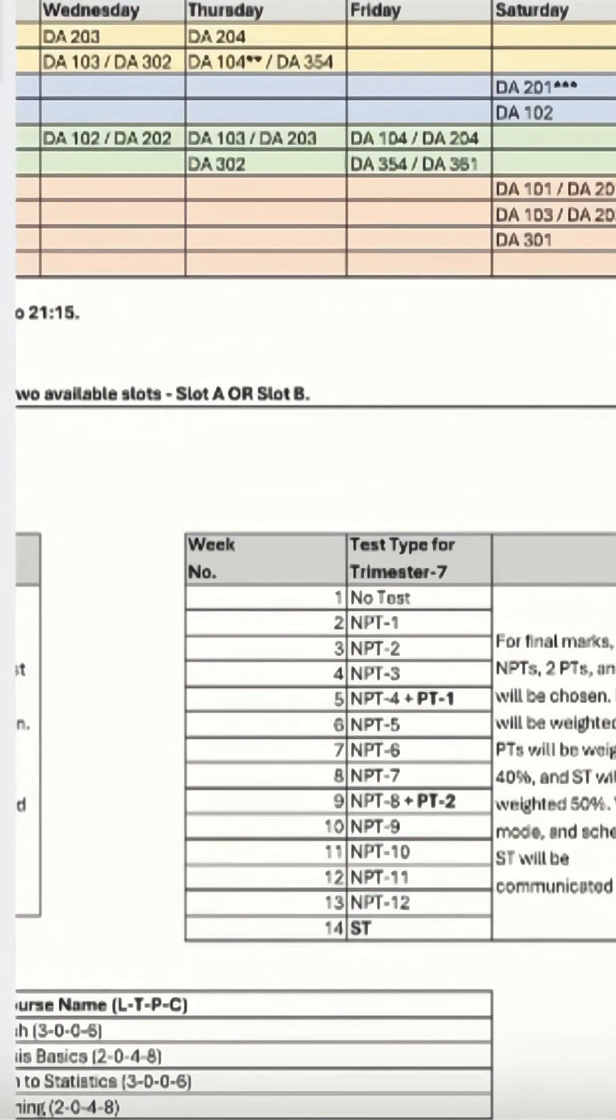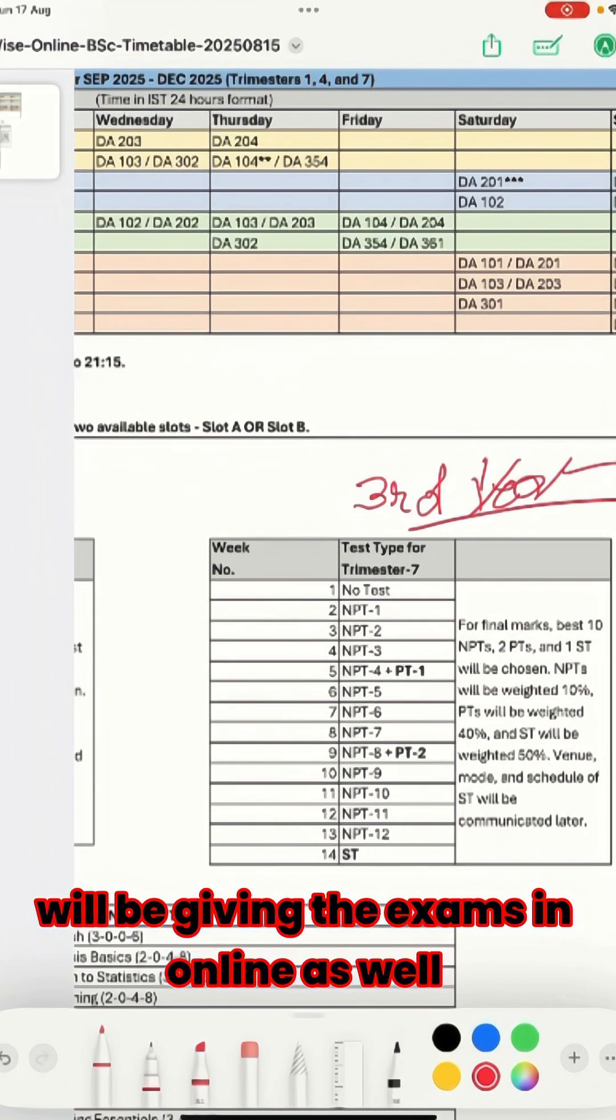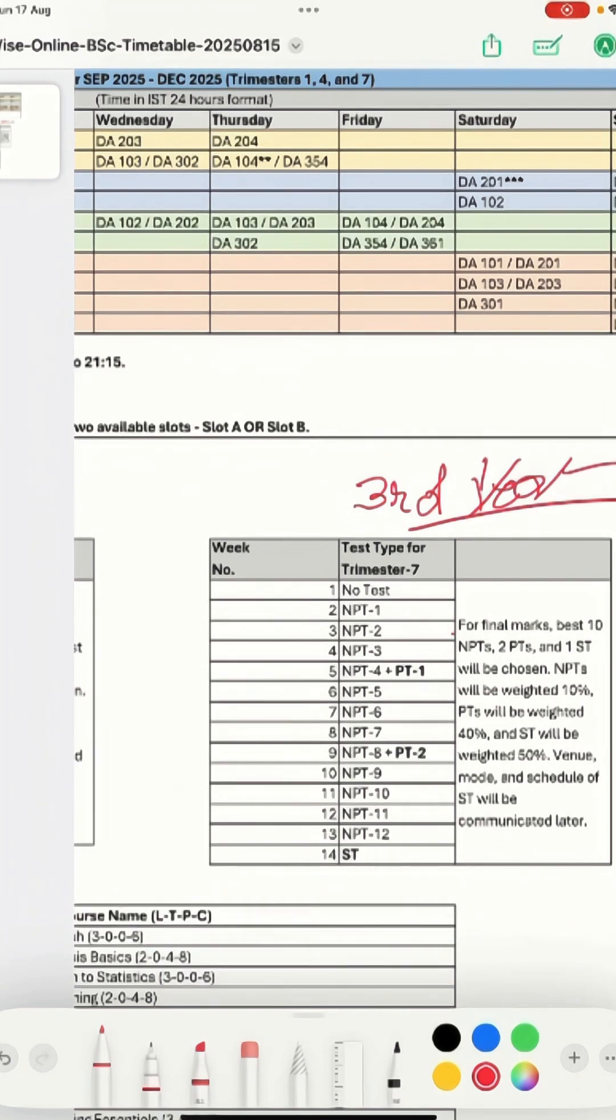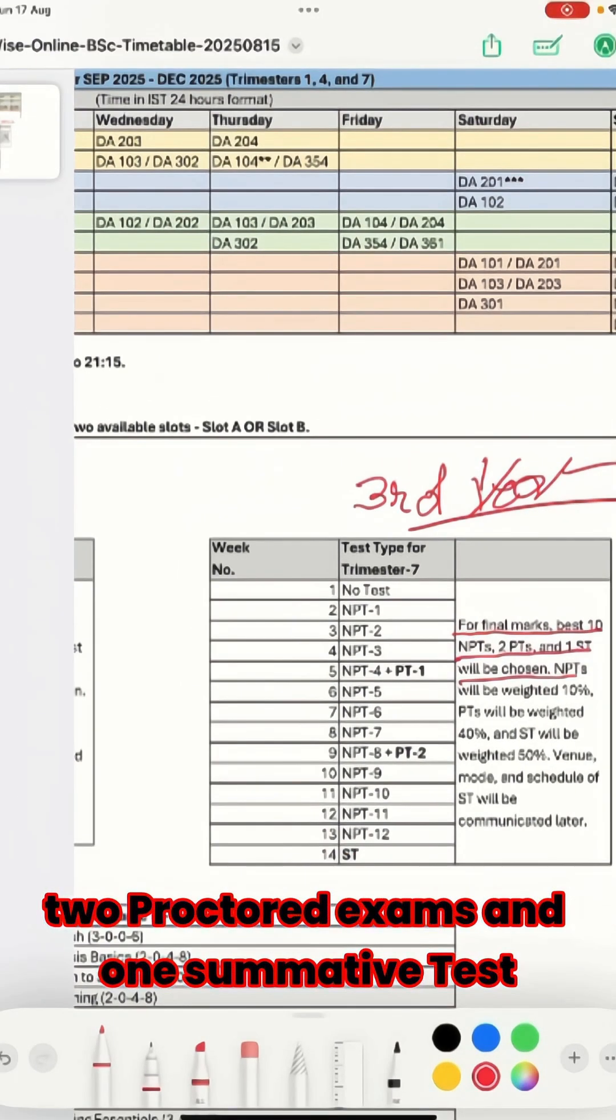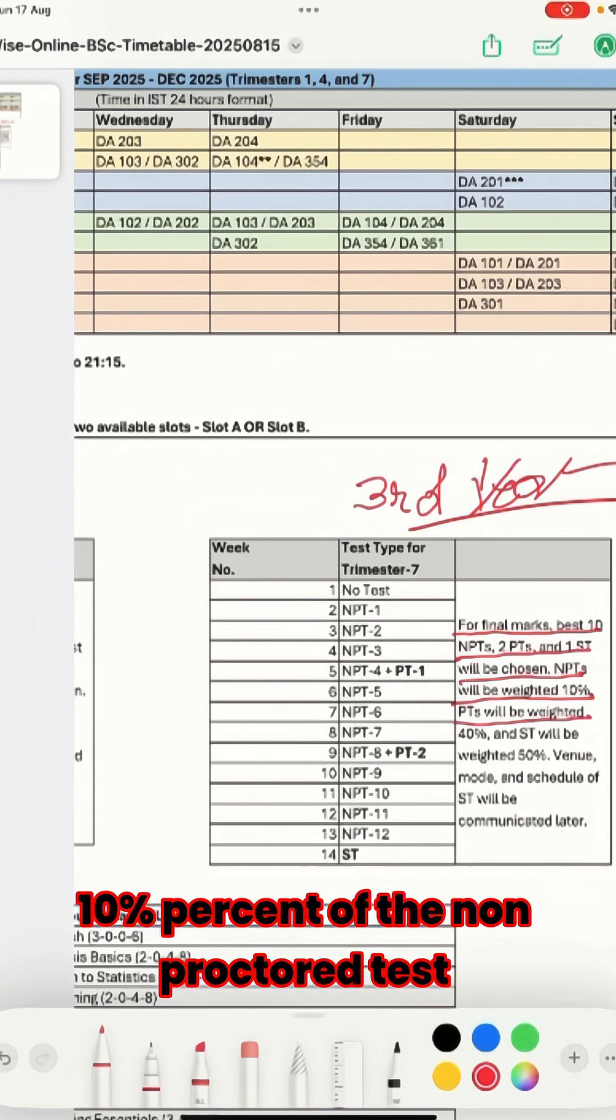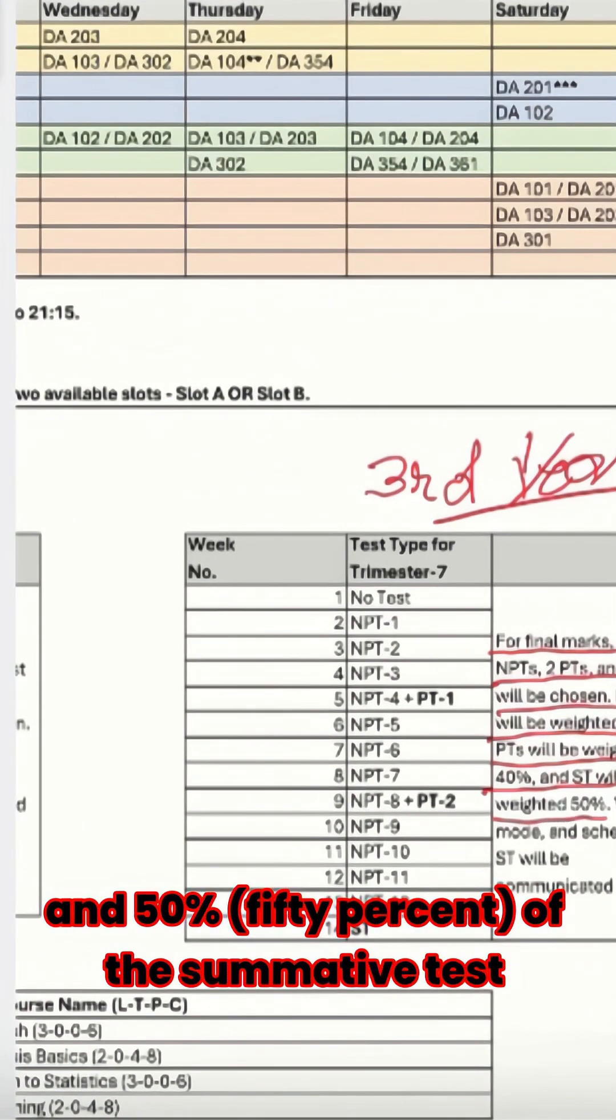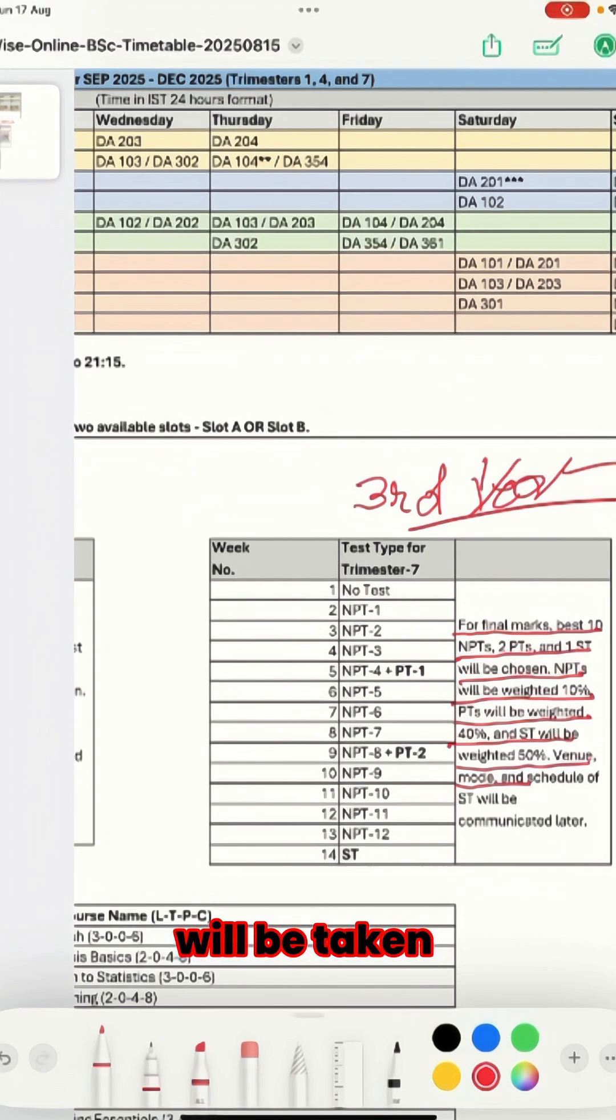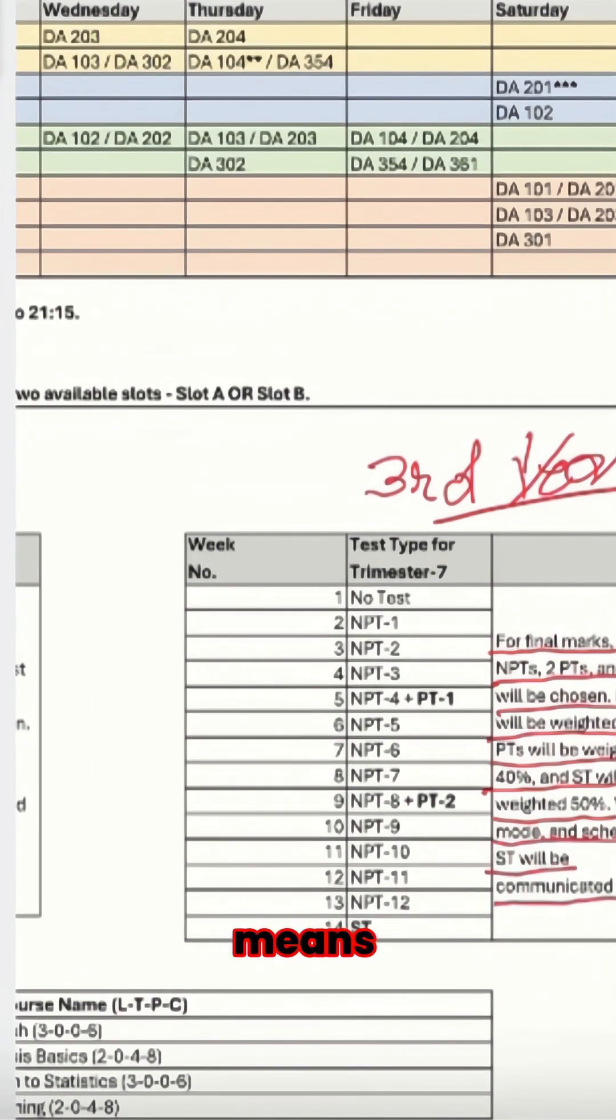You can see that third year students will be giving the exams in online as well as offline mode. For the final marks, best 10 NPTs, two proctored exams, and one submittive test will be chosen. Ten percent of the non-proctored test, 40 percent of the proctored test, and 50 percent of the submittive test will be taken. Venue and schedule for the submittive test will be communicated later.